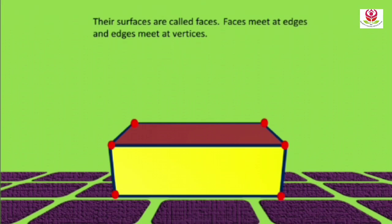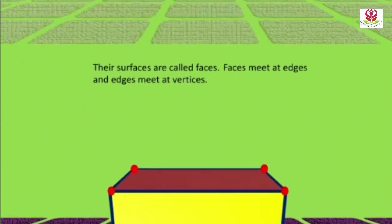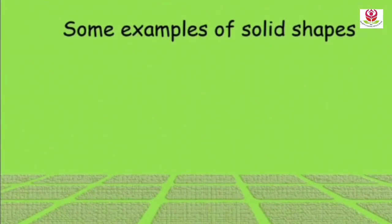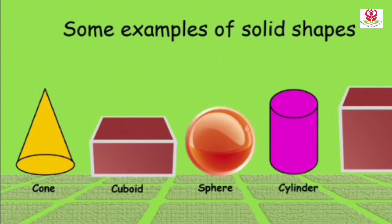Some examples of solid shapes or 3D shapes are: cone, cube, sphere, and cylinder. Let us learn more about these 3D shapes or solid shapes.